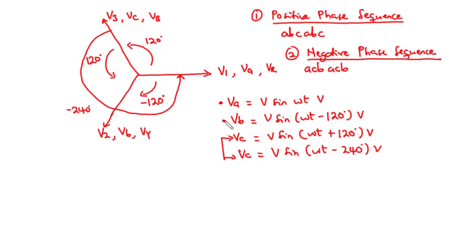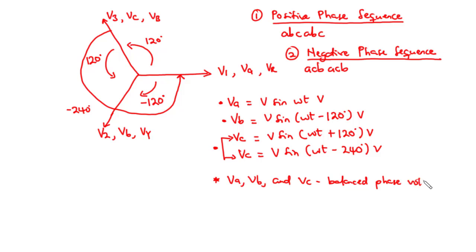Considering these three voltage sources, they have the same amplitude or magnitude, which is V, however they are all out of phase with each other by 120 degrees. Therefore, we say that the three source voltages — Va, Vb, and Vc — are called balanced phase voltages. They are balanced simply because they have the same magnitude, only out of phase with each other by 120 degrees. This phasor diagram is basically a phasor diagram of three-phase voltages.